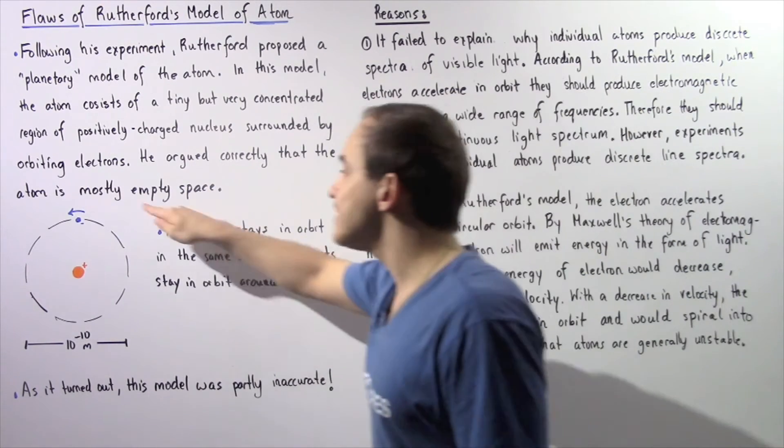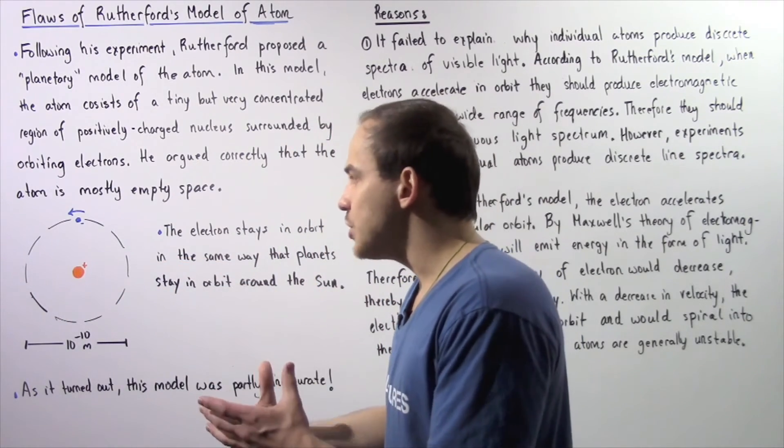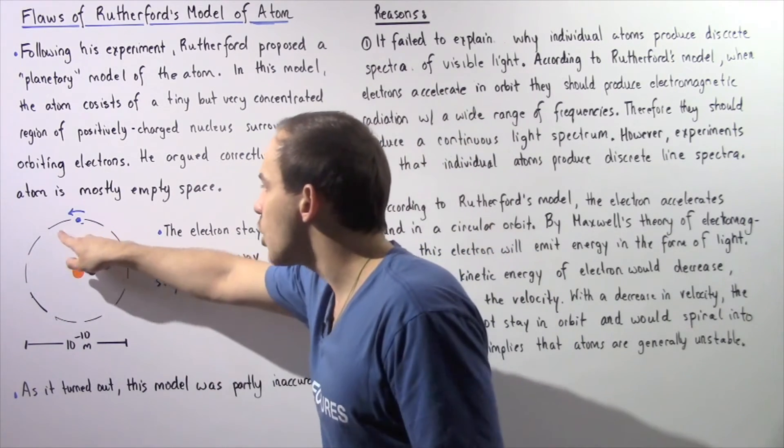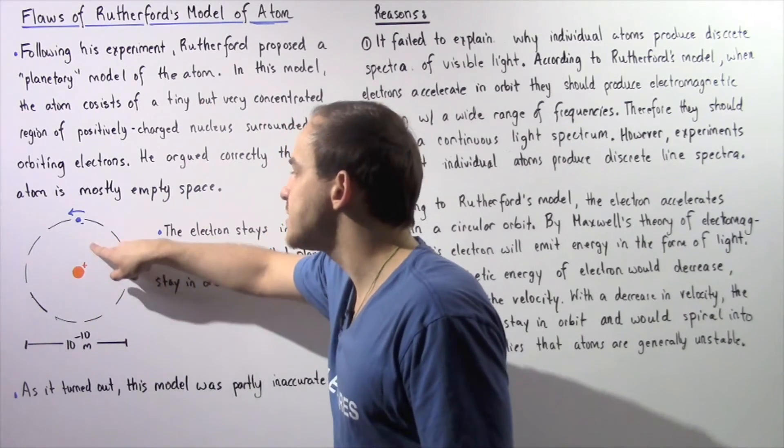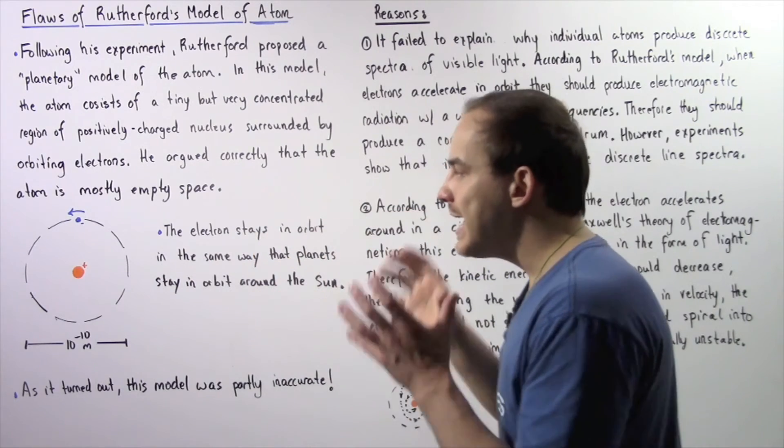Why? Well, because as it moves around, it loses energy, it loses velocity, and so the orbit becomes smaller.